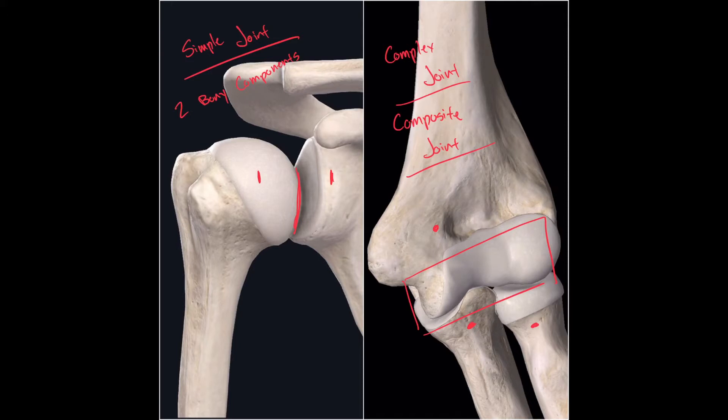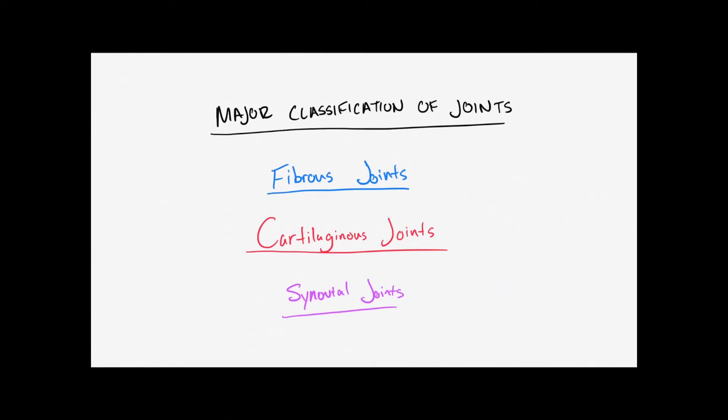Apart from whether a joint is made up of two, three, or even four bony structures, joints are classified by what holds them together. So in this image right here, I've written down three different classifications that tell us how these joints are united together.